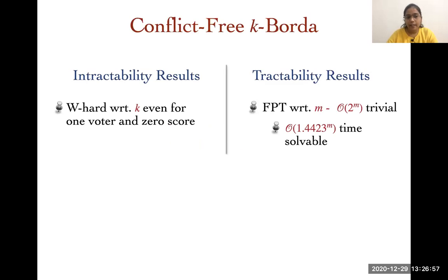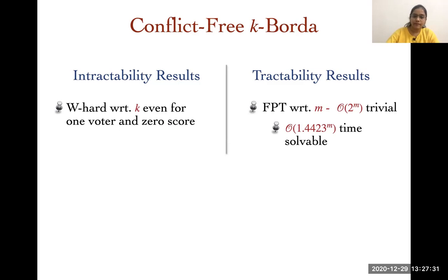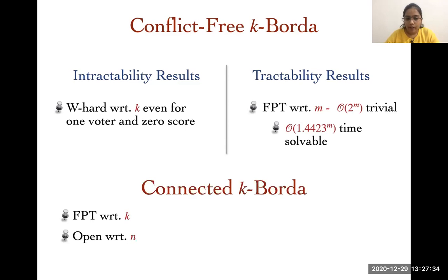For conflict-free K-Boda, the problem is W[1]-hard with respect to the size of the committee, even for one voter and zero score. This also gives W[1]-hardness with respect to the number of voters, since the problem is para-NP-hard with respect to the number of voters. The problem has a trivial FPT algorithm with respect to parameter M, and we improve this running time to 1.4423^M. For connected K-Boda, the problem is FPT with respect to the committee size, but the question remains open with respect to the number of voters.